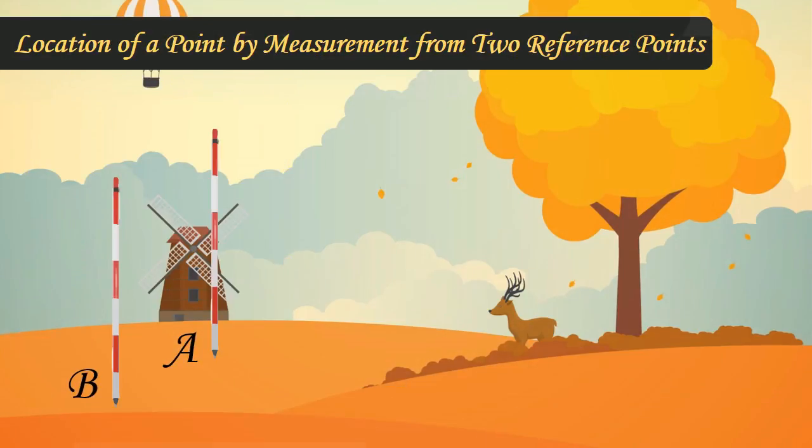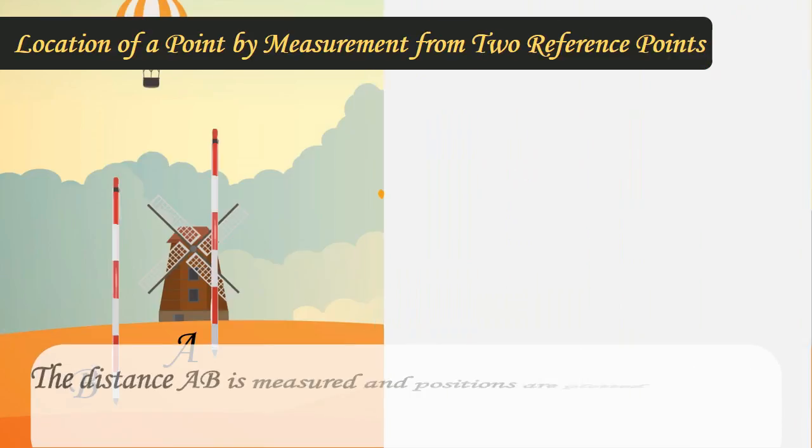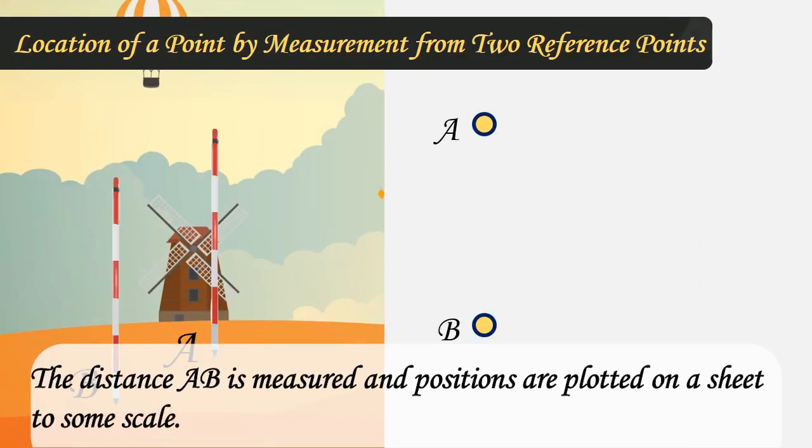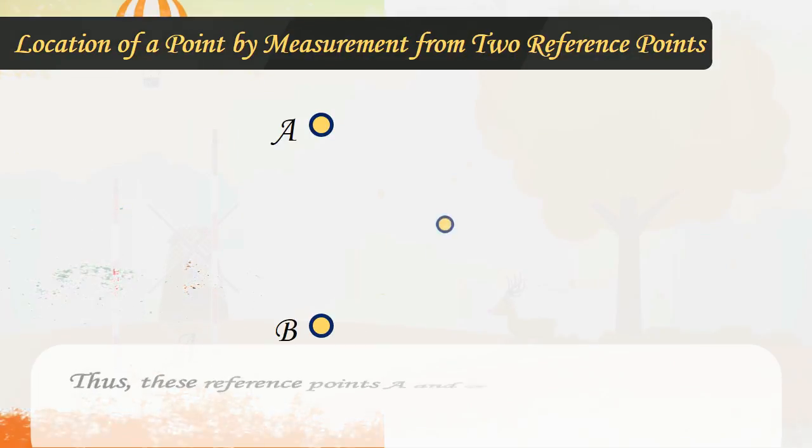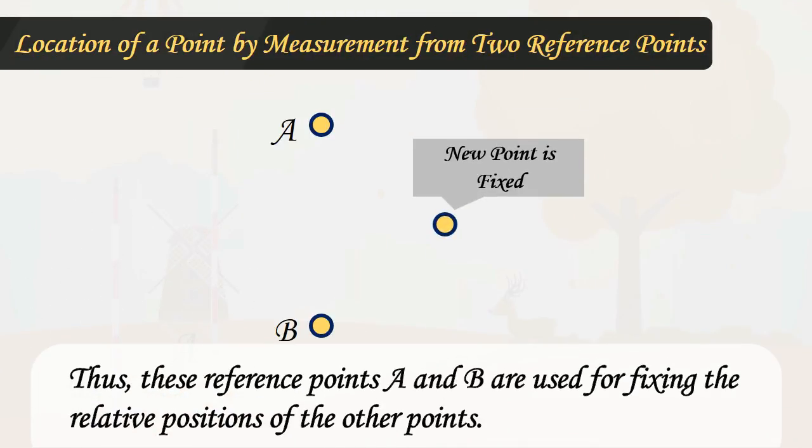Let A and B be the reference points on the ground. The distance AB is measured and positions are plotted on a sheet to some scale. Thus, these reference points A and B are used for fixing the relative positions of the other points.